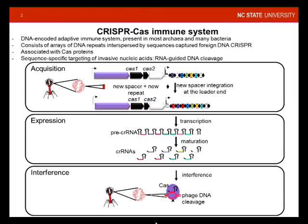In the last stage — the interference stage — those small interfering nucleic acids combine with Cas proteins to form a ribonucleoprotein complex that specifically guides nucleases towards complementary nucleic acids, typically phage, virus, or plasmid. Those small guide sequences provide a template for sequence-specific cleavage, typically double-stranded DNA breaks of the target, generating interference.